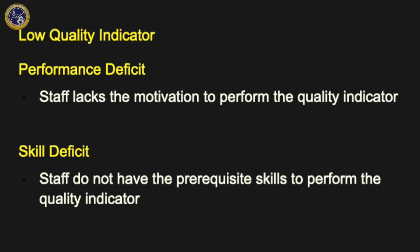If there's some evidence of a quality indicator, determine if the issue is a skill deficit or a performance deficit. If the issue is a performance deficit, staff lacks the motivation to perform the quality indicator; use organizational behavior management to create opportunities to reinforce expected performance. If the issue is the result of a skill deficit, staff do not have the prerequisite skills to perform the quality indicator, and behavior skills training can be used in this instance as well.